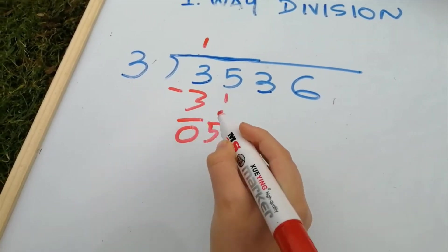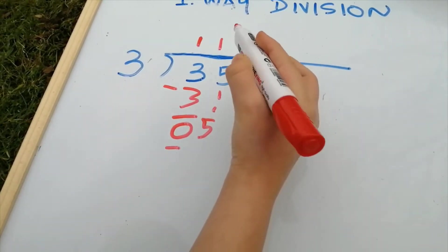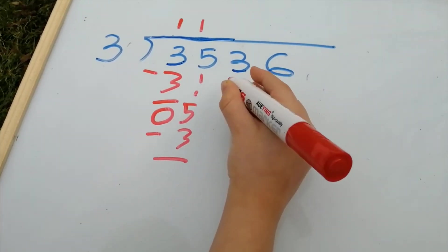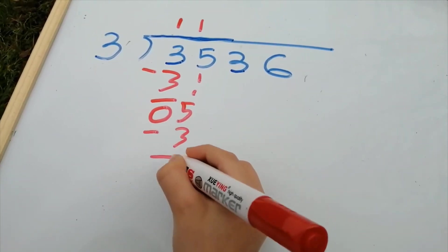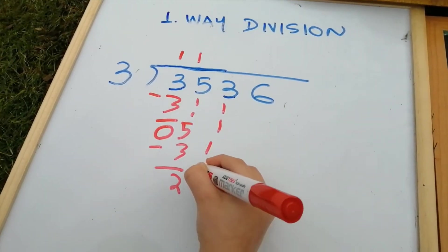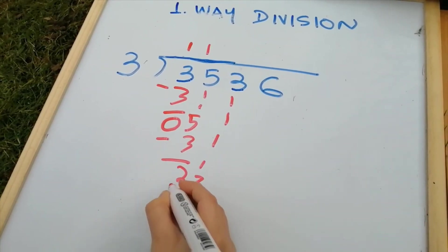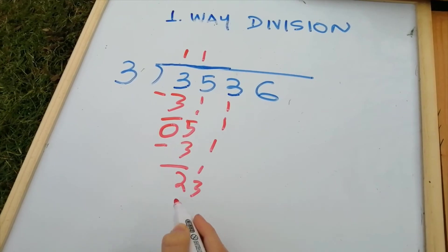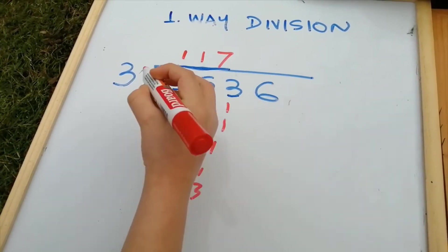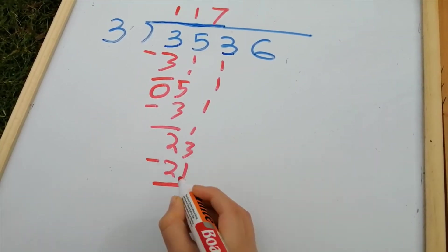How many times is three in five? One. And three times one is minus three. And equals two. And put the next number down — twenty-three. How many times is three in twenty-three? Seven. Three times seven is twenty-one. Equals two.